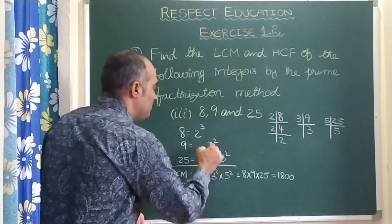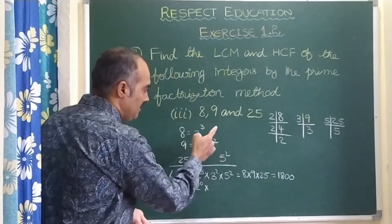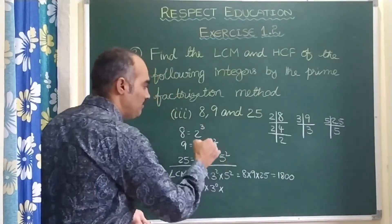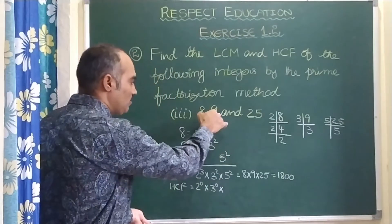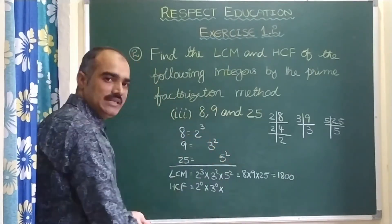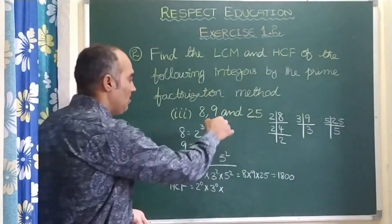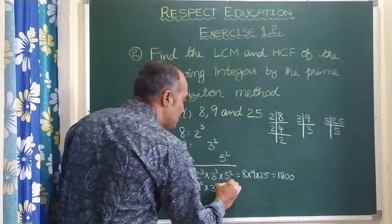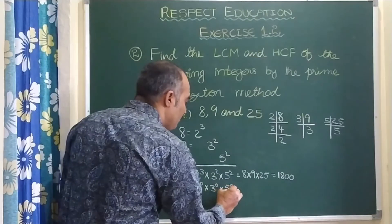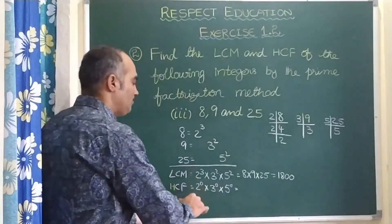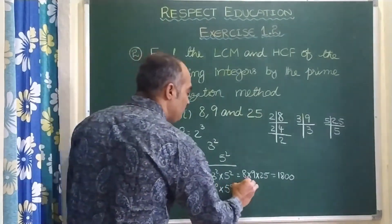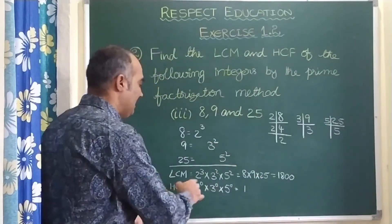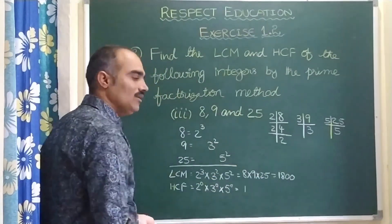So the least is 2 power 0. For the column of 3: 3 square and nothing, so it is 3 power 0. For the column of 5: nothing, nothing, and 5 square — so 5 power 0. So it is 1 into 1 into 1, which is finally 1. Therefore, LCM is 1,800 and HCF is 1.